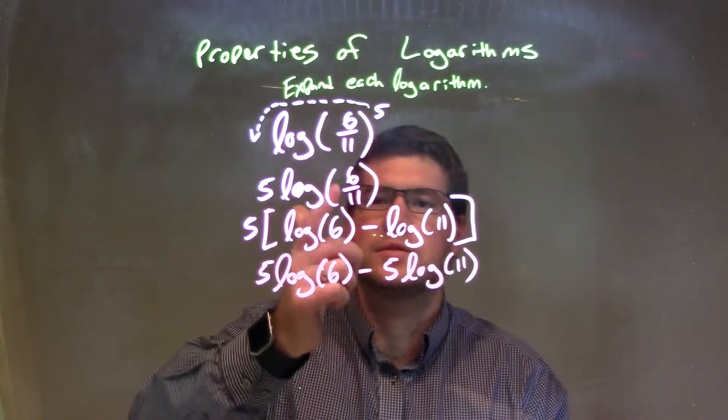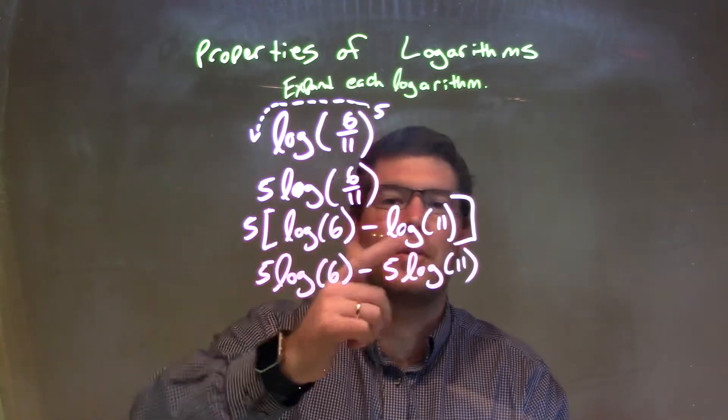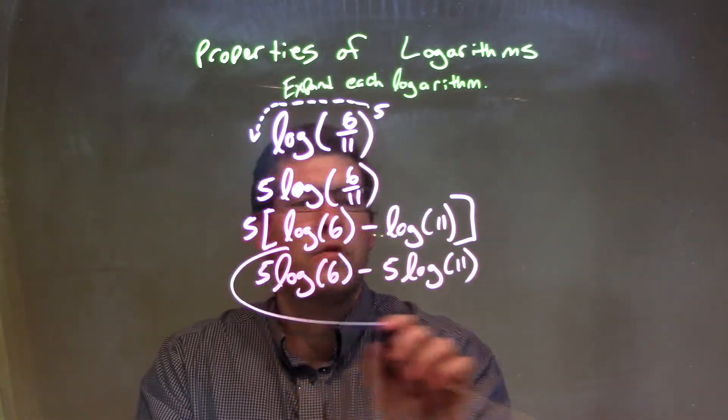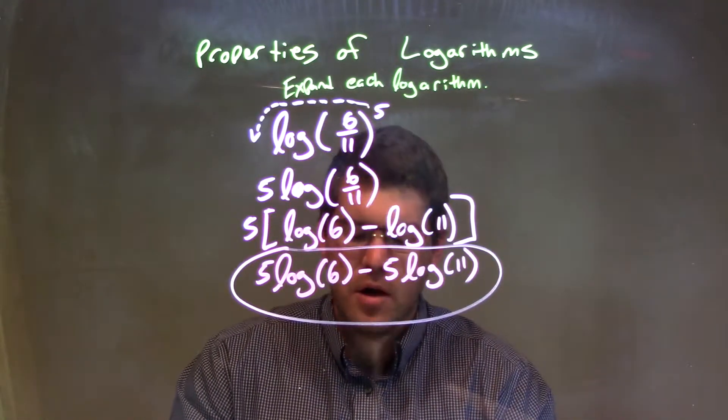Make sure there are two key parts here: the subtraction matches up with that division, and that exponent of 5 came out front and made sure it could go to both parts. But either way, our final answer is right here, 5 log of 6 minus 5 log of 11.